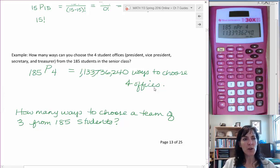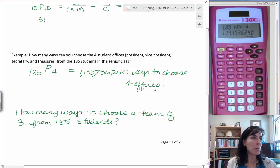So this problem is how many ways are there to choose a team of three from those 185 students that you have? And so does the order matter if you're choosing a team? No, because we haven't been told that there's a first place, second, third.